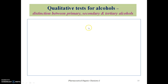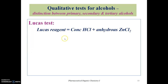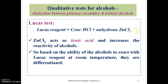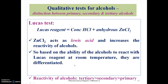Previously we discussed classification of alcohols into primary, secondary, and tertiary based on the carbon to which the alcoholic group is attached. Is there a test to differentiate a given alcohol into primary, secondary, or tertiary? Yes — there is one popular test called the Lucas test. In the Lucas test we use Lucas reagent, which is a combination of concentrated hydrochloric acid and anhydrous zinc chloride. Zinc chloride is a Lewis acid that increases the rate of reactivity of the alcohols. Based on the ability of the molecules to react with zinc chloride at room temperature, we differentiate primary, secondary, and tertiary alcohols.